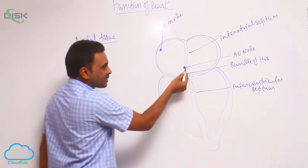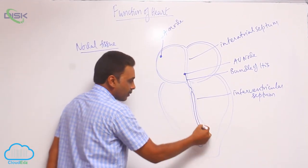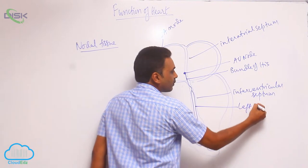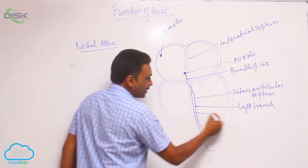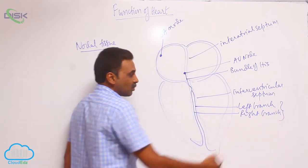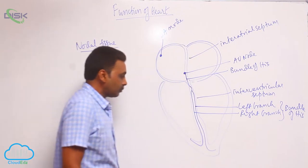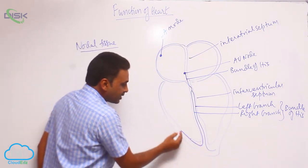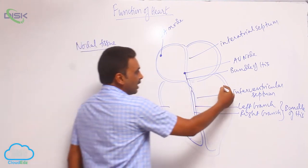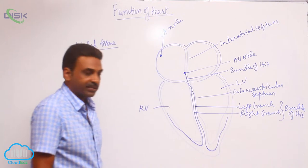The bundle of His passes into the interventricular septum and divides into two branches — one is the left branch and another is the right branch. The right branch enters the right ventricle, and the left branch enters into the wall of the left ventricle.